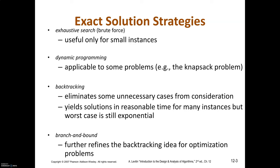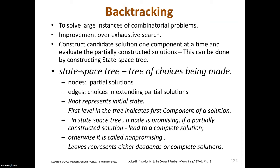In exhaustive search, this approach is applicable only to small instances. Dynamic programming is applicable only for a few problems like knapsack and traveling salesman. In backtracking, we eliminate some unnecessary cases from consideration, which finds the solution in a reasonable amount of time, but the worst case is still exponential. Branch and bound refines the backtracking idea and is applicable only for optimization problems. Now we'll see the backtracking design technique, using which large instances of combinatorial problems can be solved — an improvement over exhaustive search.